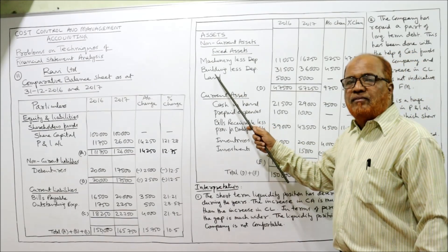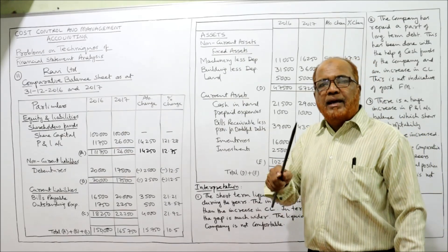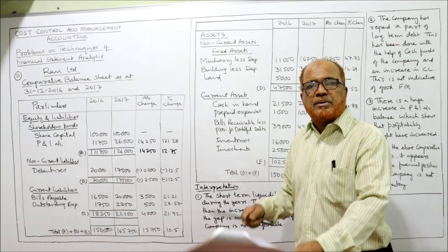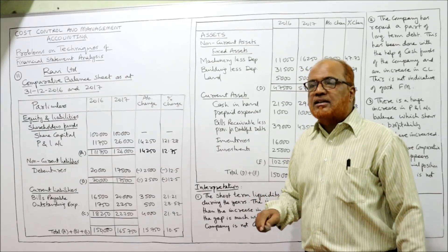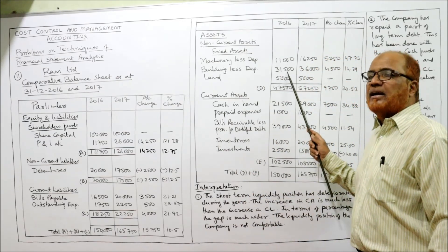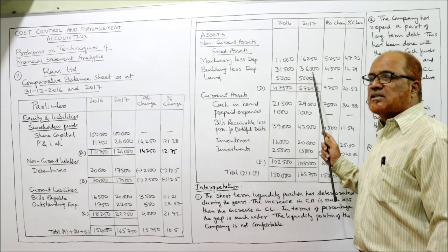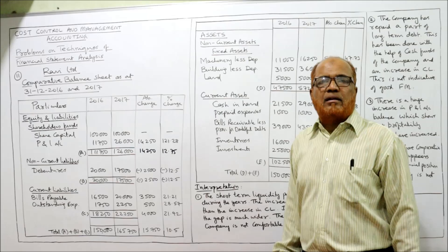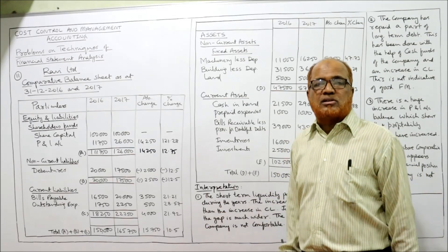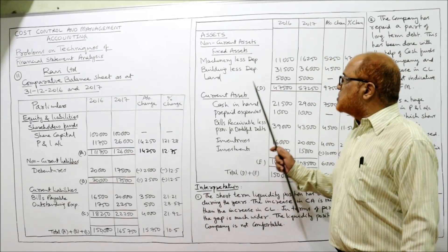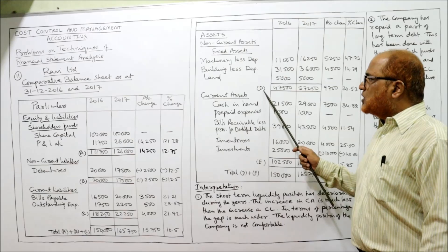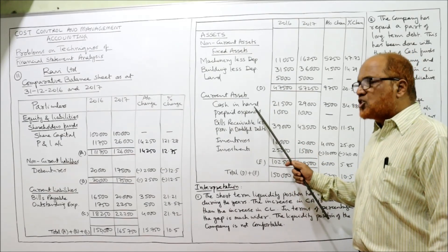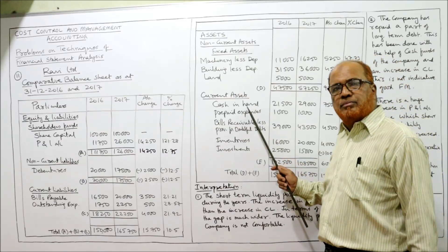Similarly for building: cost minus provision for depreciation. After deducting depreciation, building value is 31,500 last year and 36,000 current year. Land has no depreciation since it is a non-depreciable asset, so the same value is carried. This gives us total D for non-current assets.